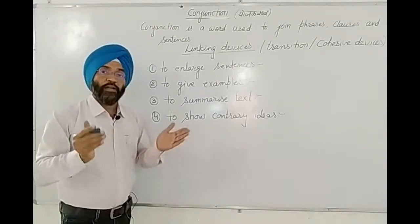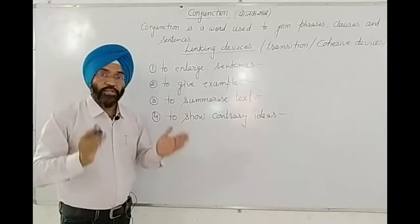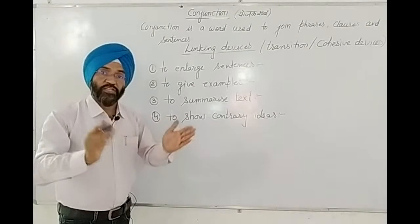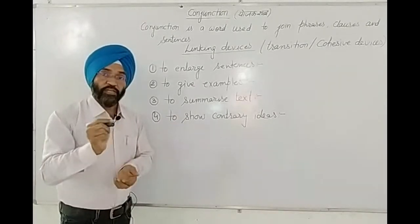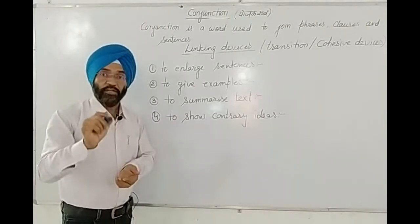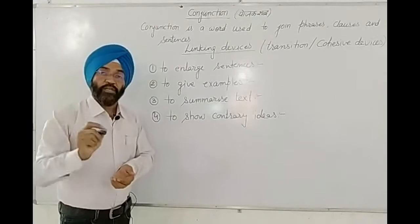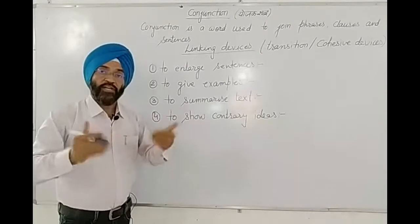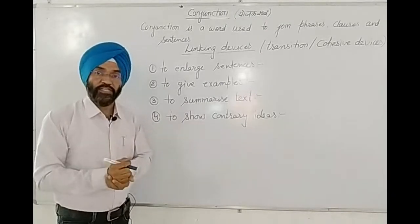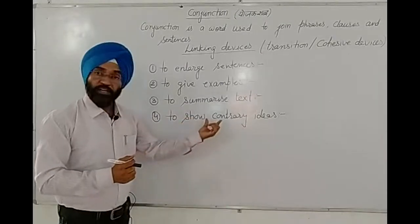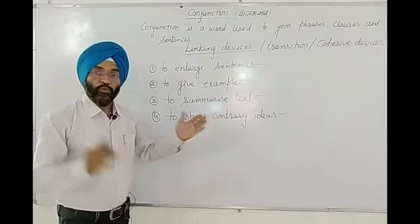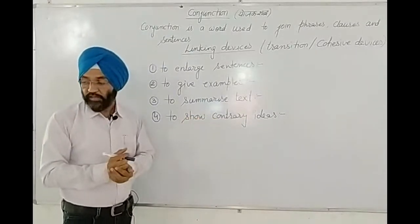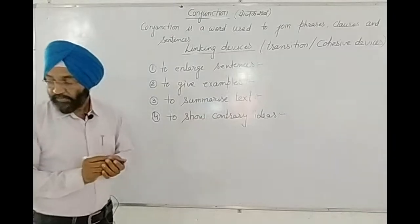For example, to show contrary ideas we use: 'He was weak, but he passed the exam.' Here 'but' is the linking device connecting two contrary ideas — weakness and success. This is an adversative use of a conjunction as a linking device.